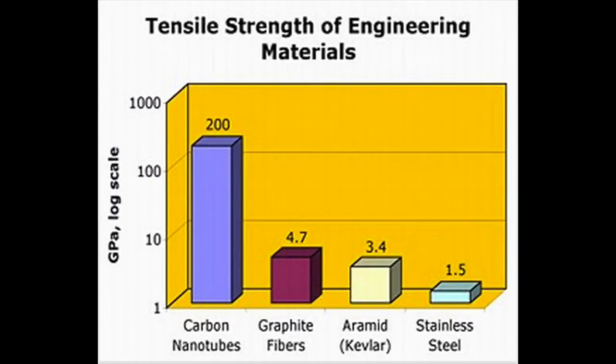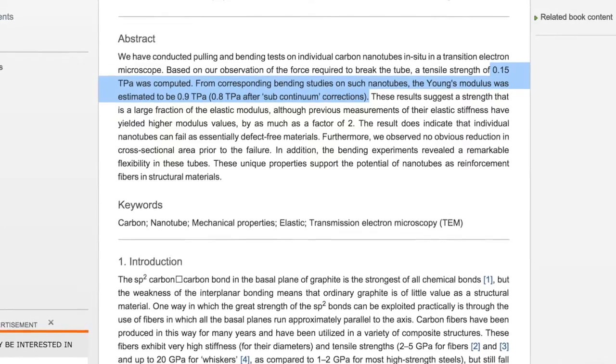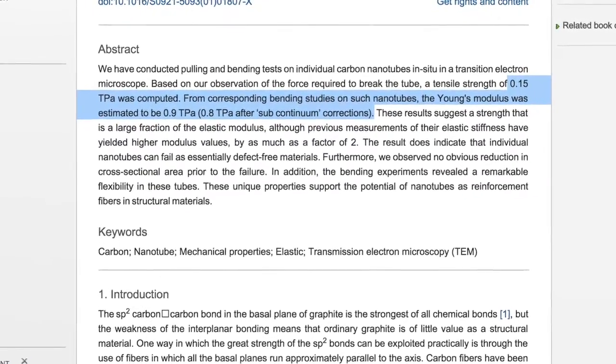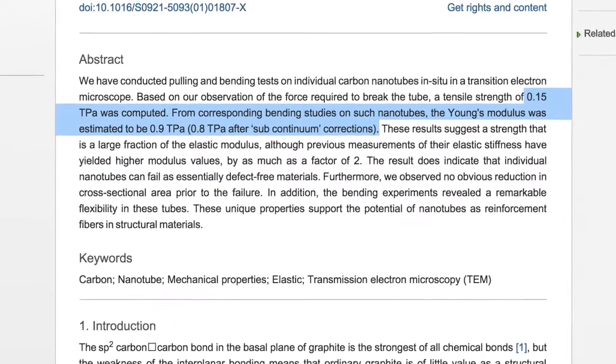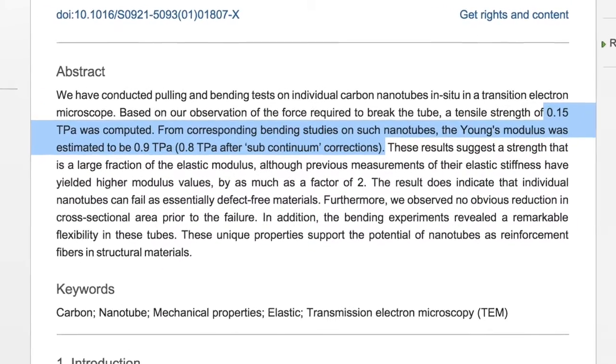The tensile strength of carbon nanotubes is incredibly large, surpassing some of the strongest materials such as graphite fibers, Kevlar, and stainless steel. A tensile strength in Young's modulus of up to 0.15 terapascals and 0.8 terapascals respectively have been recorded for multi-walled carbon nanotubes.